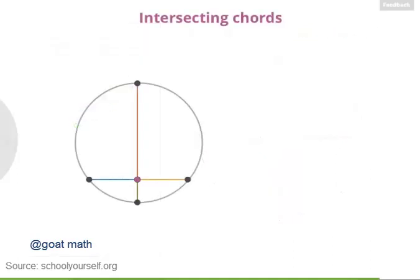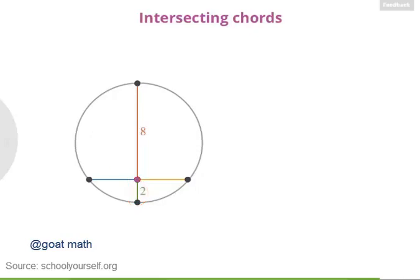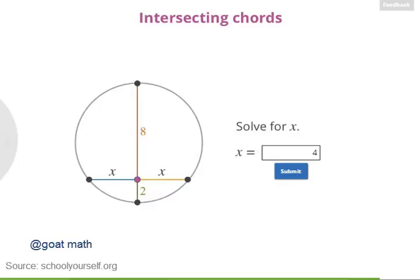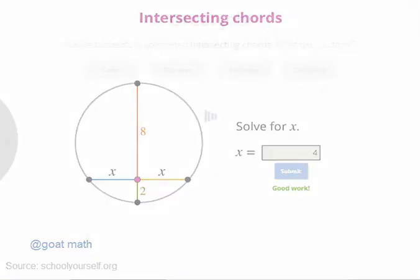Last question. Here's another pair of intersecting chords, and suppose this segment has length 8, this segment has length 2, and these two segments have the same length x. Use what you know about intersecting chords to solve for x.